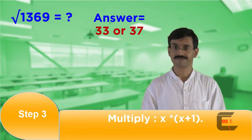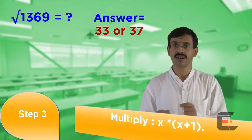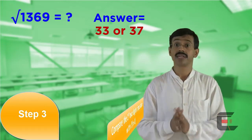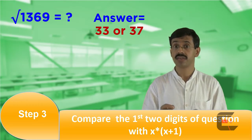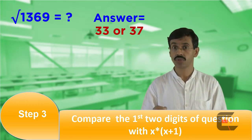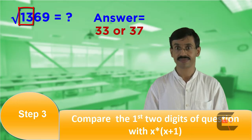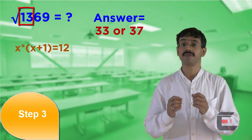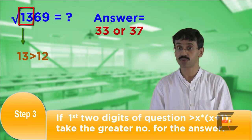Step number 3. Multiply x with x+1. In our case, x is equal to 3. Therefore, it will be 3×4, which is 12. Now we shall compare the first two digits of the question with the result of x×(x+1). First two digits of the question are 13. The result of x×(x+1) gives us 12. If the first two digits of the question are greater than x×(x+1), then take the greater number as your answer.